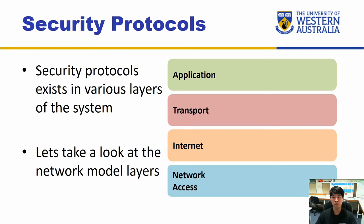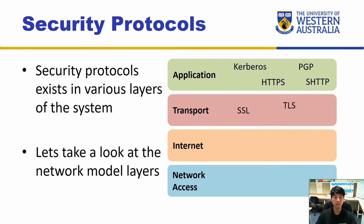Let's have a look at the application layer. Which security protocols do you think fall into the application layer? You should be familiar with things like HTTPS, but there are some other protocols like Kerberos, PGP, and SHTTP. In the transport layer we have more familiar names like SSL and TLS. At the internet layer we have items like VPN and IPSec, and finally at the network access layer we have items like PPP, Variances, and PPTP.